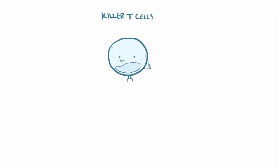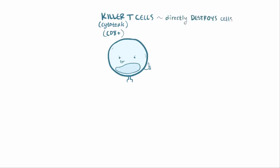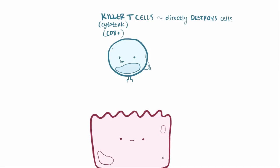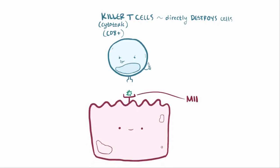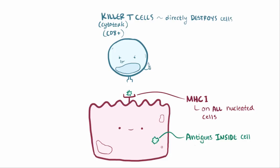In type IV hypersensitivity, damage to tissue can also be caused by killer T cells, also known as cytotoxic T cells or CD8-positive T cells, and these destroy cells directly. CD8-positive T cells target antigens when they are presented on MHC class I molecules, which are present on all nucleated cells in the body, meaning every cell is a potential victim. MHC class I molecules present antigens from inside the cell, so this process is important for when cells become infected with viruses or when they are mutated, like with cancer.